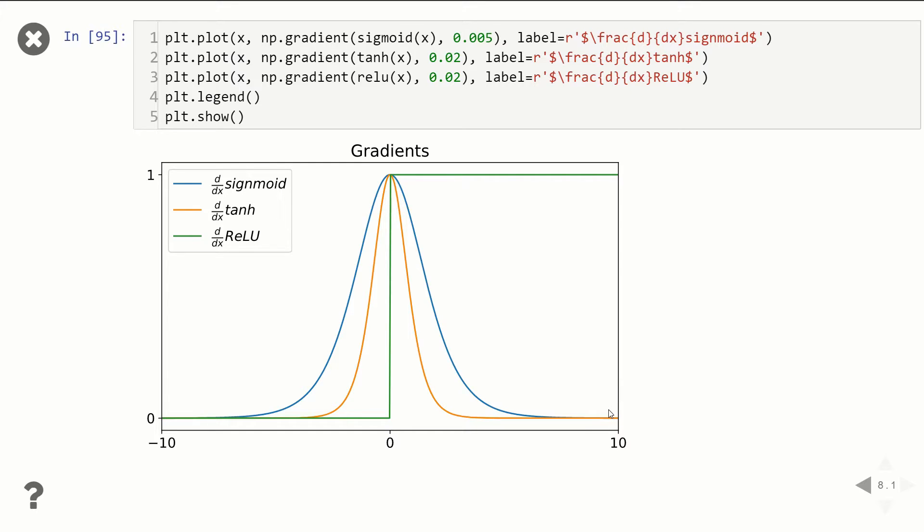You can see for sigmoid and tanh, for large negative and large positive values, the gradient goes to zero. Whereas ReLU, for large positive values, the gradient maintains a value of one.